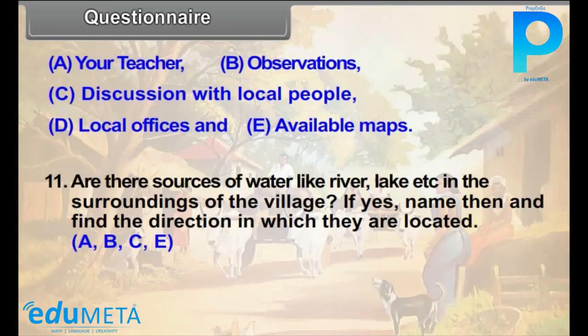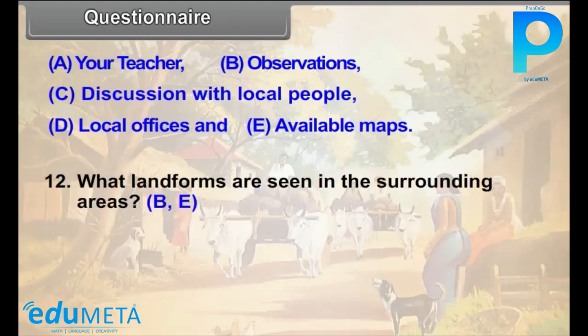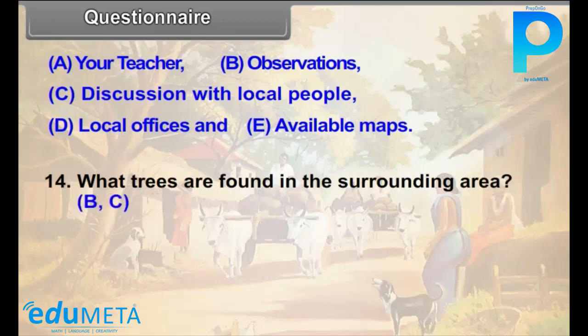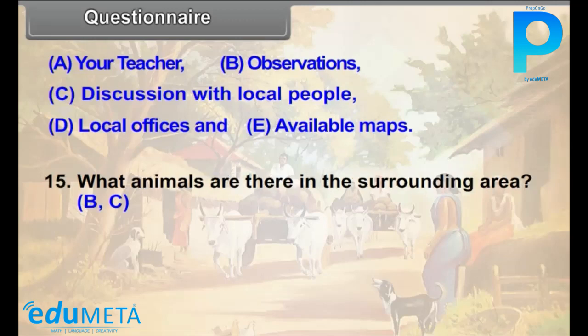Question 12: What landforms are seen in the surrounding areas? (B, E) Question 13: What could be the reasons for the specific location of the village? (A, C) Question 14: What trees are found in the surrounding area? (B, C) Question 15: What animals are there in the surrounding area? (B, C) Question 16: What are the types of houses in the village? What building materials are used for their construction? (B, C)